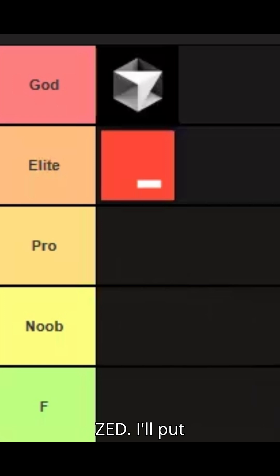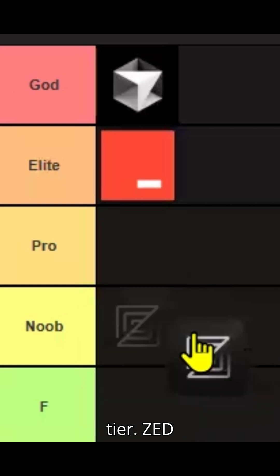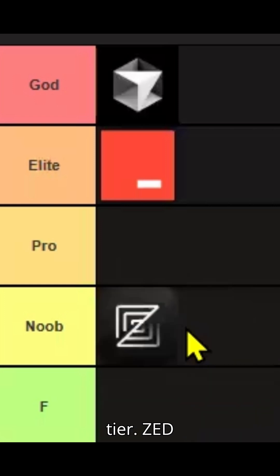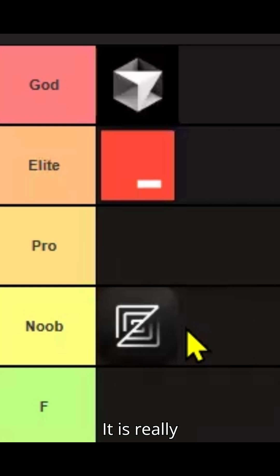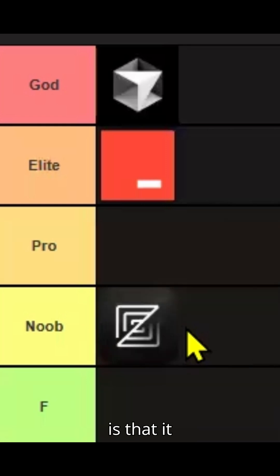Then we have Z. I'll put Z in Noob tier. Z is great for performance — it is really good in performance — but the issue is that it lacks so many AI features.